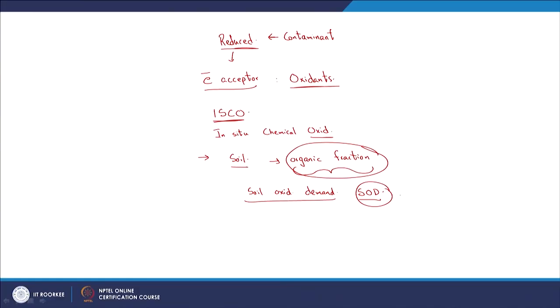Whenever you are adding a relevant oxidizing agent, you need to take into account the stoichiometry — you need to account for the soil oxidant demand as well as the amount of oxidant required for oxidizing the actual contaminant. That is something to keep in mind.